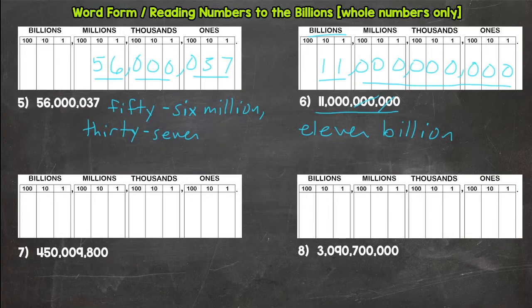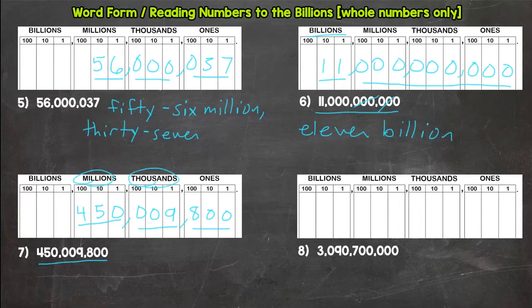All right, let's go down to number seven. We have a nine-digit number which would leave us in our millions period. So 450 million, 9,000, 800. So again, 450 million, 9 thousand, 800. Let's write it out.